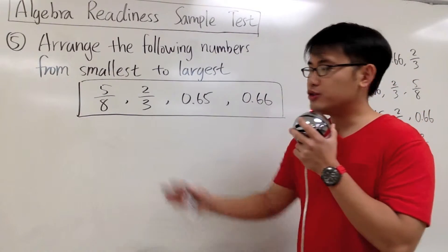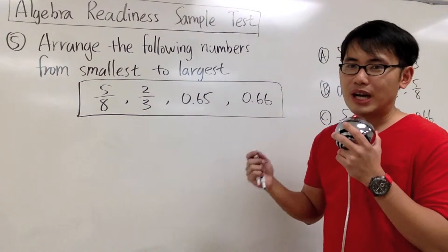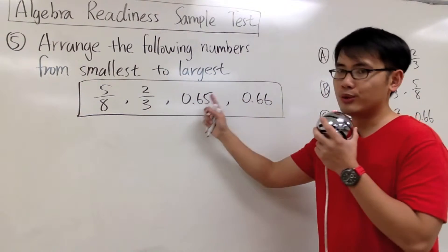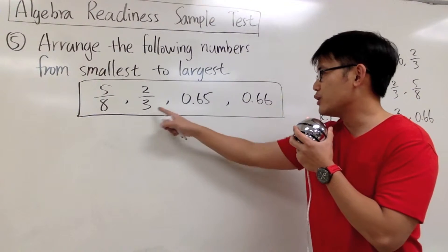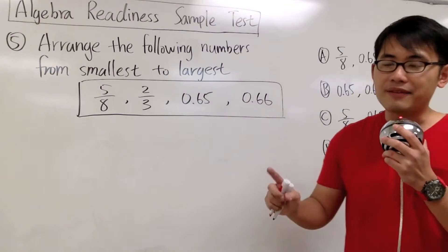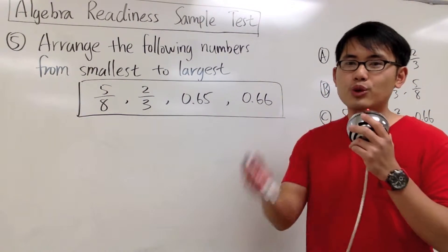For number 5, we are going to arrange these numbers from the smallest to the largest. But we have a small trouble because we have two fractions and also two decimals. We cannot really compare 2 over 3 and 0.65 at the same time. We have to just either work with fractions or all decimals. Which one would you prefer?